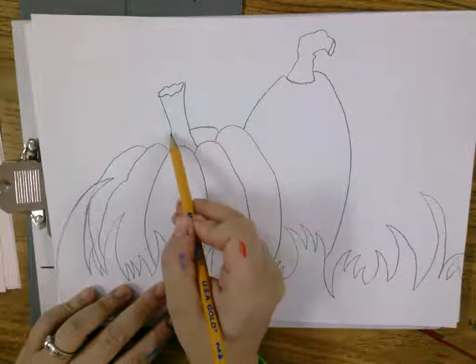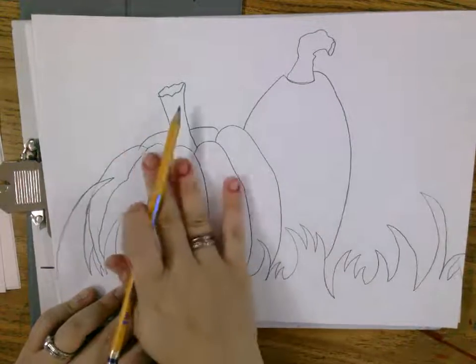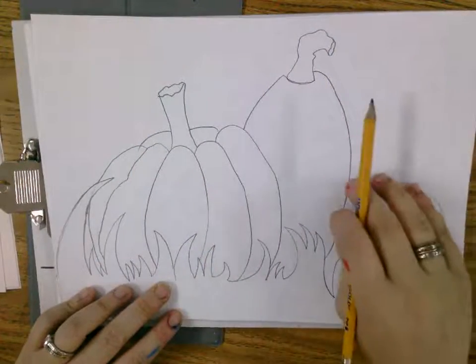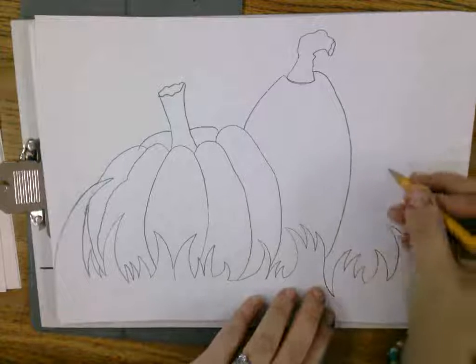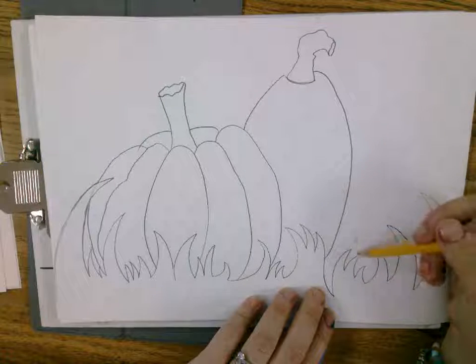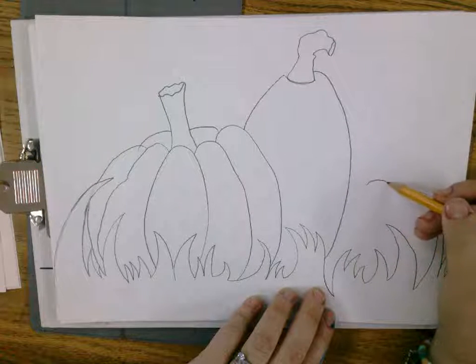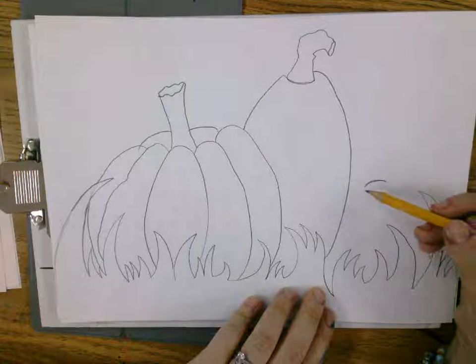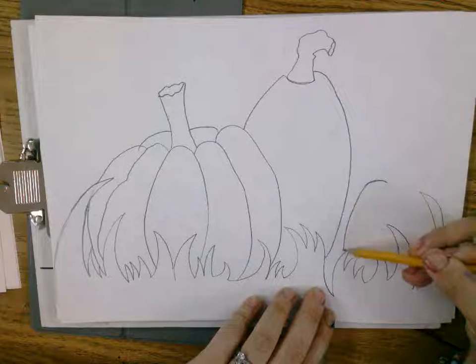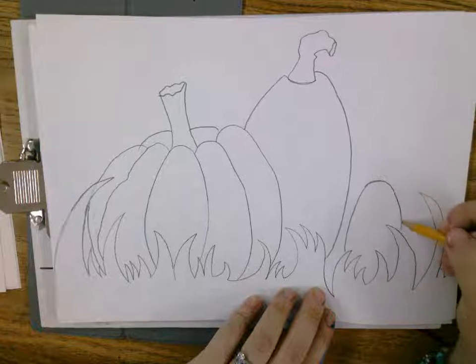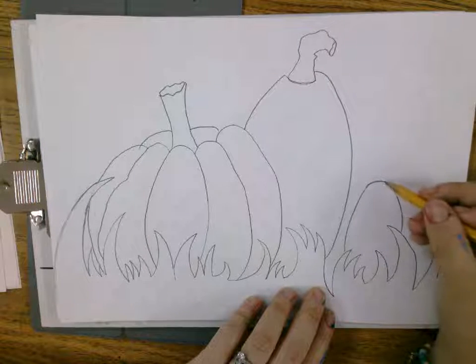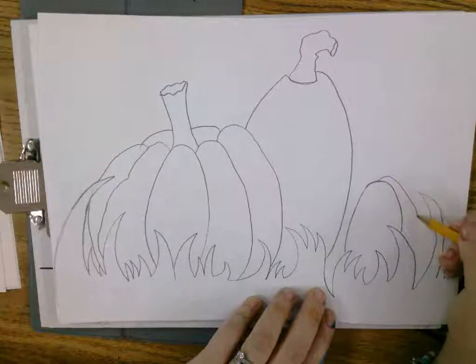So, same thing. Start with your little rainbow with your smiley, upside down, frowny face. Curve line down. Curve line down. Curve line down. Curve line behind it.